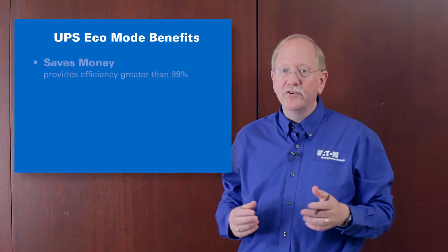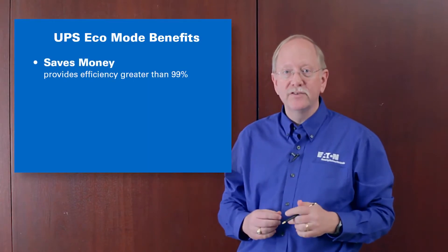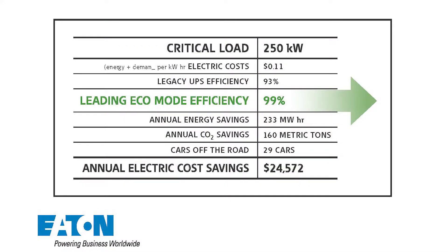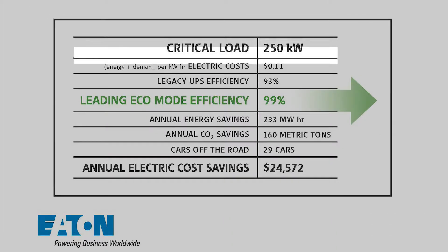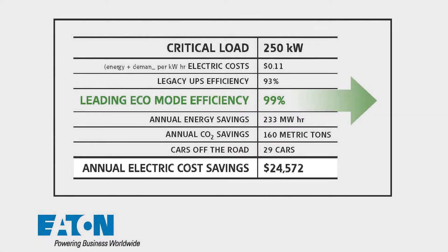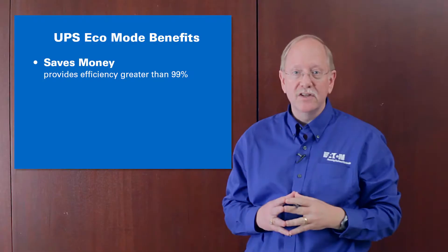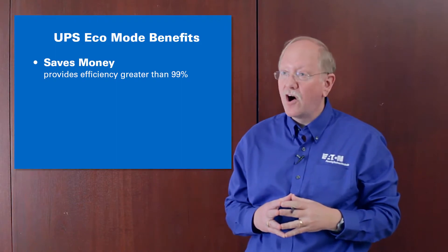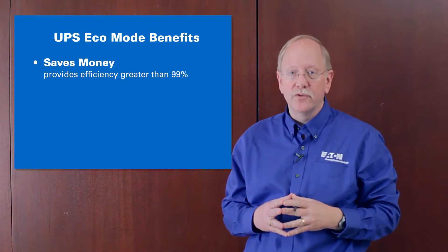The main reason for having Eco mode is saving money. So just as an example, let's take a look at a medium-sized UPS. Here we have a 250 kilowatt UPS compared against a legacy UPS that's 93% efficient, using an Eco mode UPS at 99%, and the savings at 11 cents a kilowatt hour are $24,500 per year of operation. Significant savings, and we'll actually repay the cost of the UPS within two to three years.